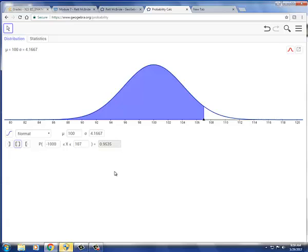And you'll see that the probability is 0.9535. Now notice that the shaded region in our curve is the area that's to the left of 107. And that would be great if we were conducting a left-tailed test. But this is a right-tailed test and we actually want the area that's to the right of 107.